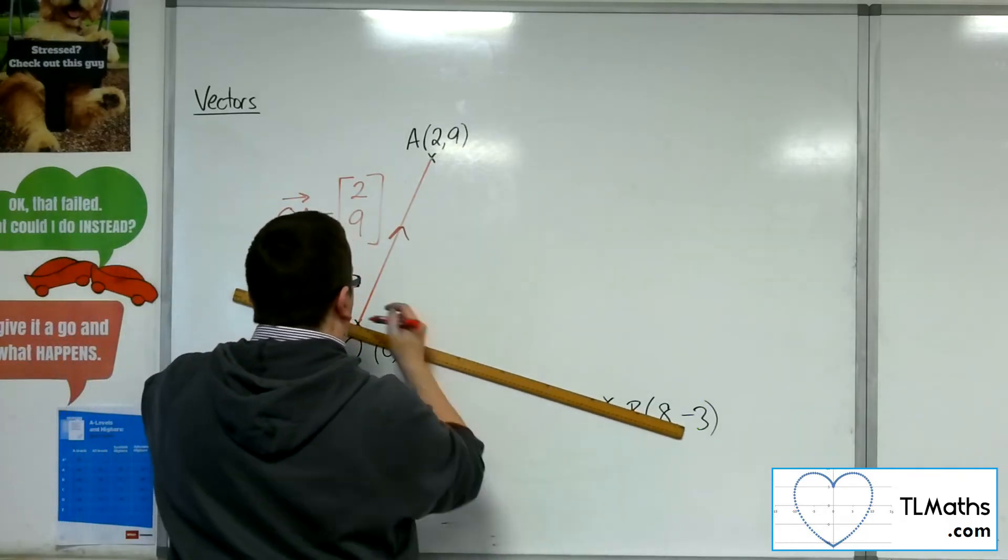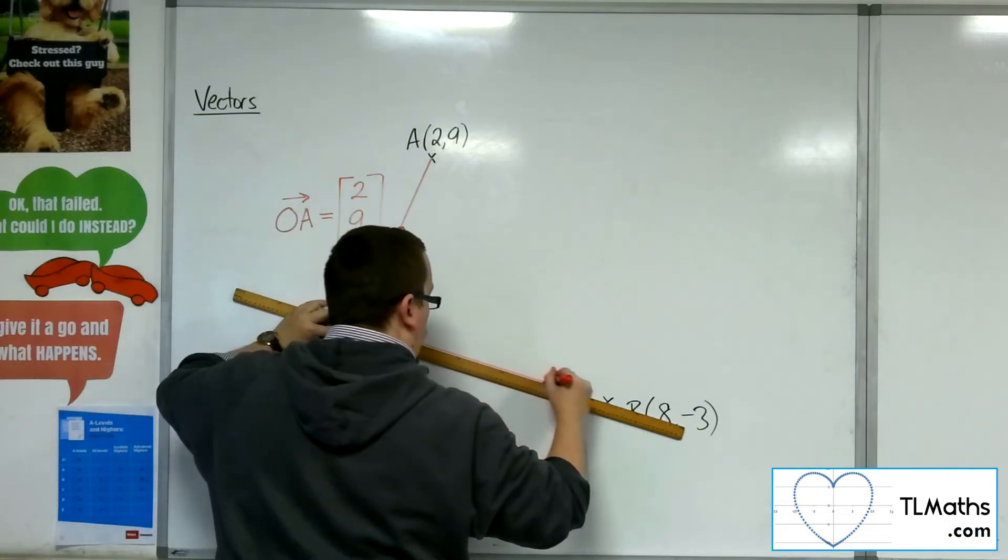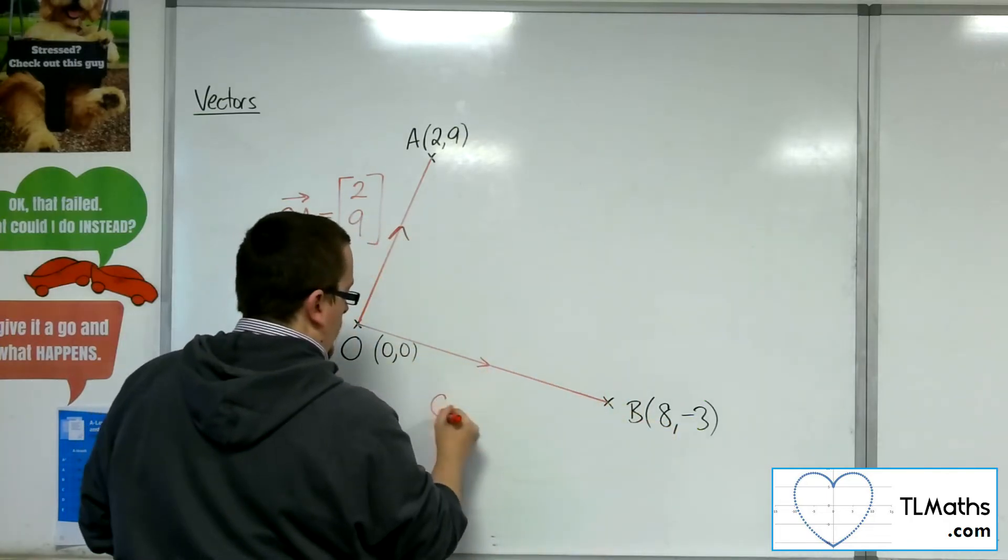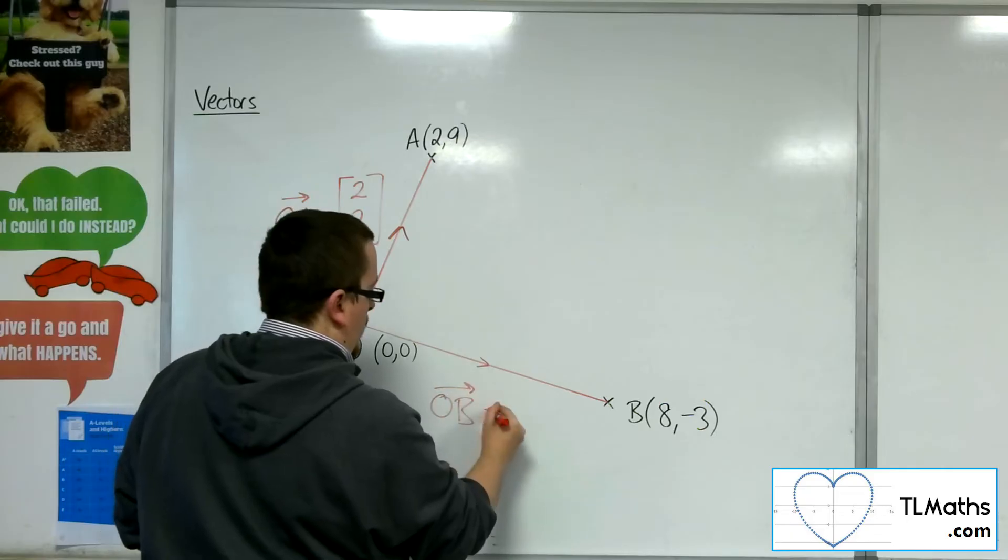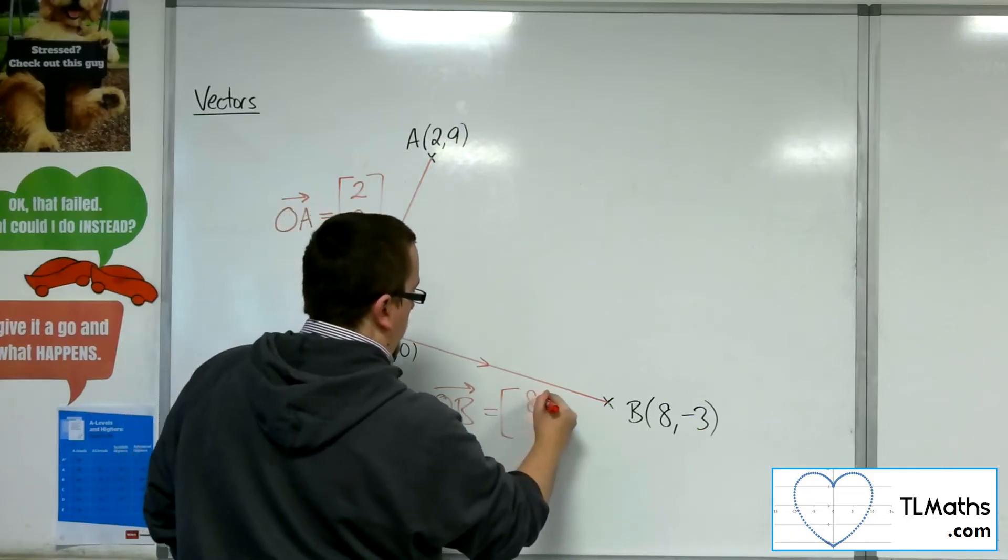OB, the position vector from O to B, is OB, and that would just be 8,-3.